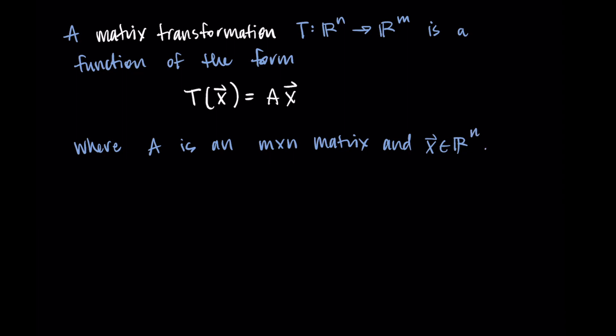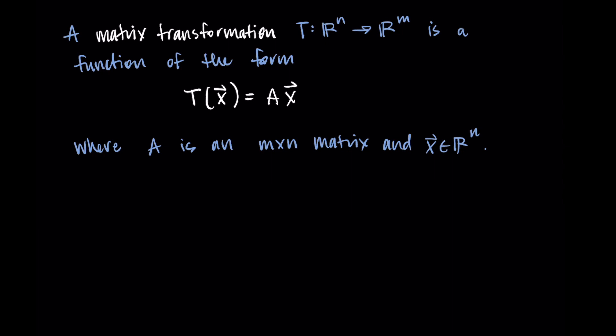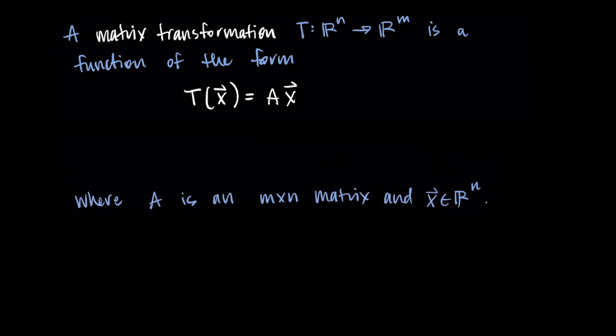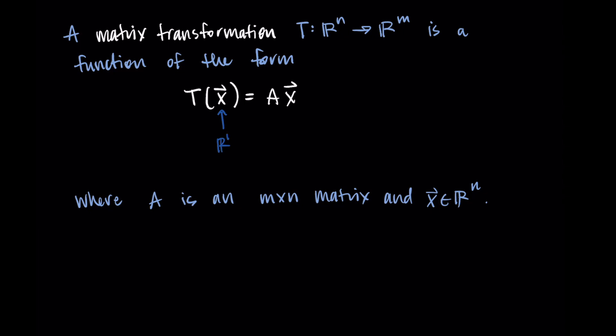So what do we have here? The name of our matrix transformation, or our function, is T. We're using a capital letter T. You can honestly use any letter you want. This is just a really common one that we see. Then this R^n with the arrow to R^m indicates the domain and the range of this function. So the function T is taking in an input vector x, and that's an element in R^n. So we're starting in R^n.